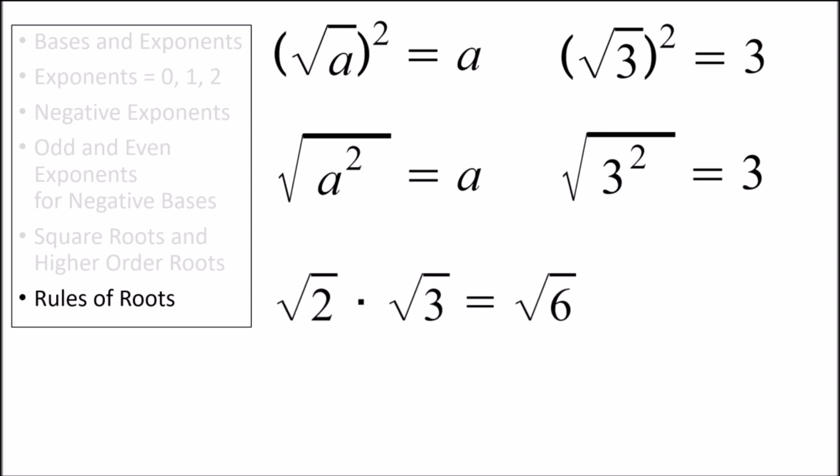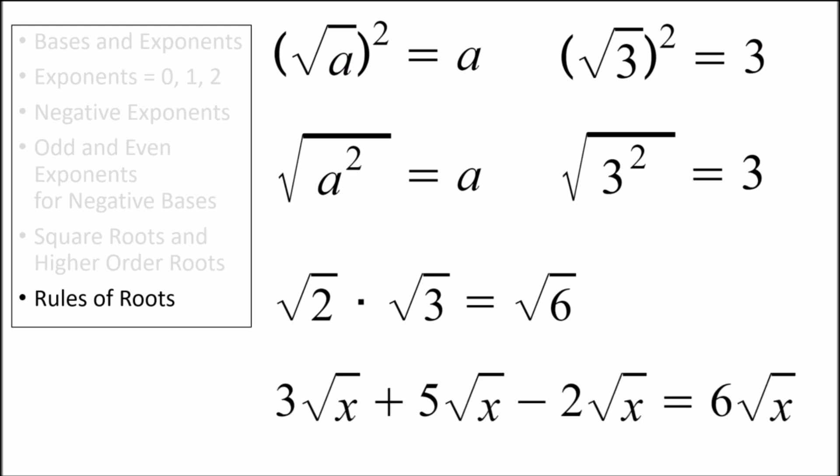The next rule is that radicals can be multiplied together. For example, the square root of 2 multiplied by the square root of 3 gives us the square root of 2 times 3, or the square root of 6. The final rule of roots is that we can add or subtract terms that have the same value underneath the radical sign. For example, 3 times the square root of x, plus 5 times the square root of x, minus 2 times the square root of x, is equal to 6 times the square root of x, since 3 plus 5 minus 2 equals 6.